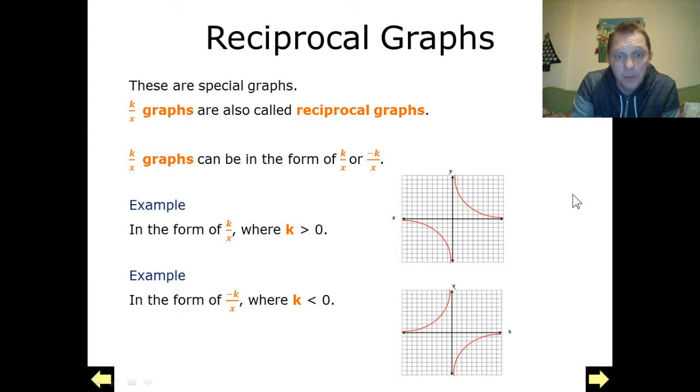If we've got a negative number, so a number less than zero, we end up with a curve which is in the second quadrant and the fourth quadrant.